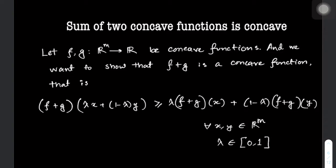Formally stating, we need to show that the function f plus g evaluated at the linear combination of x and y is going to be greater than or equal to the linear combination of the function f plus g evaluated at x and at y. This is pretty similar to our standard definition of a concave function, where x and y are elements of R^m and lambda belongs to the closed interval [0, 1].